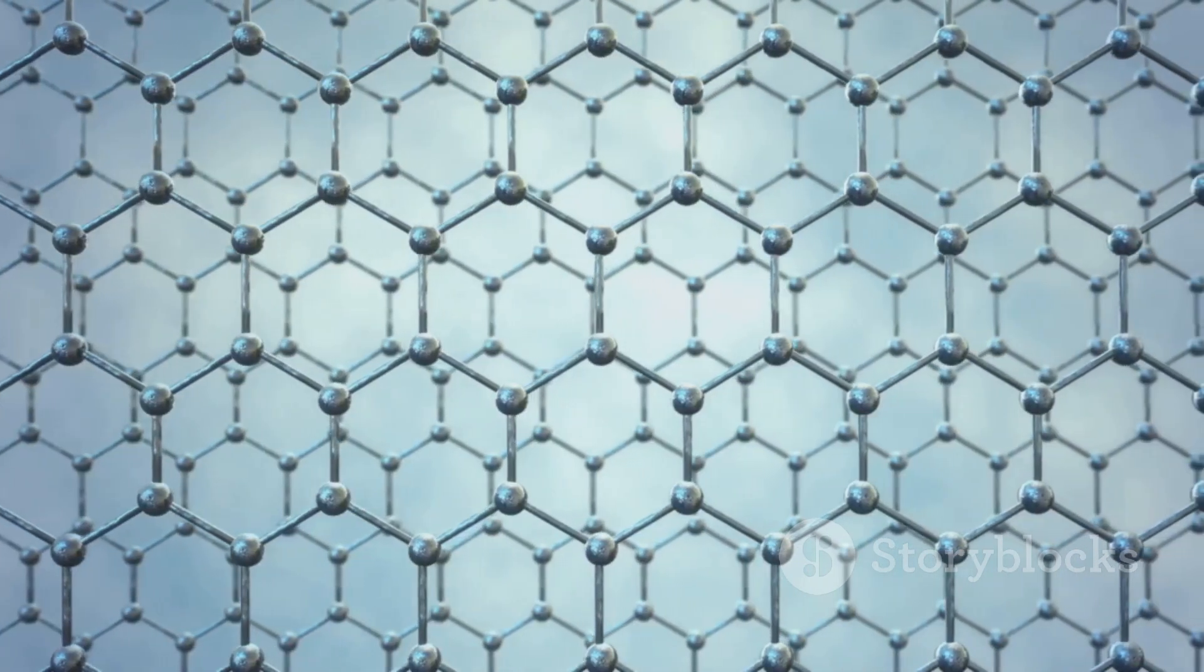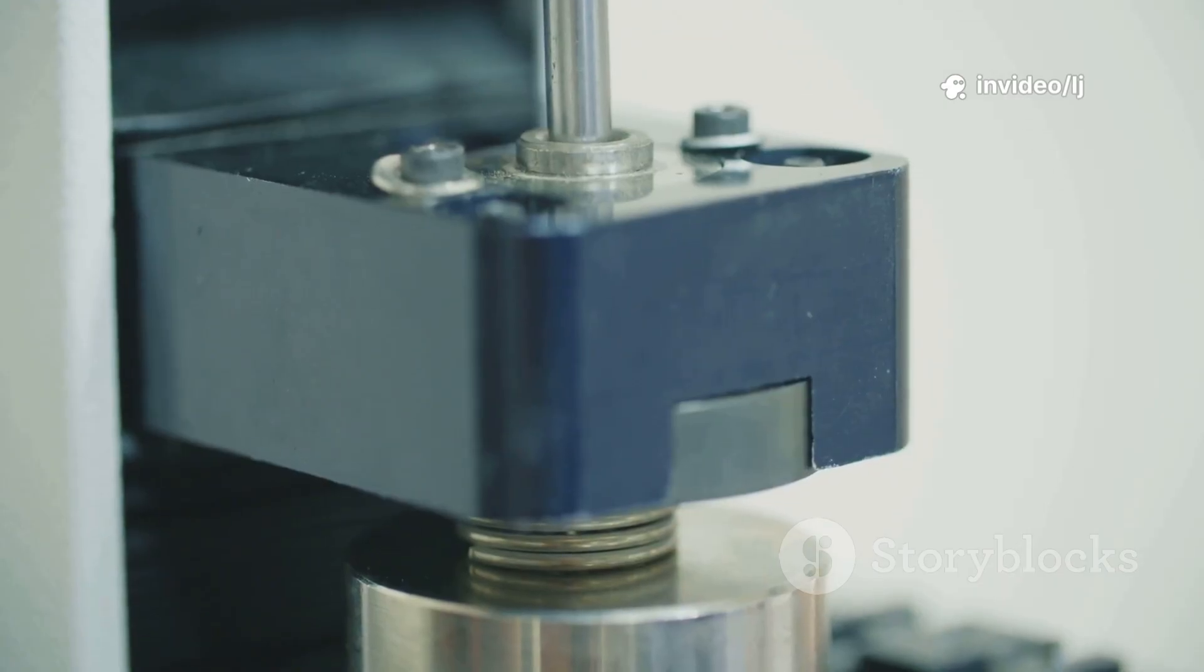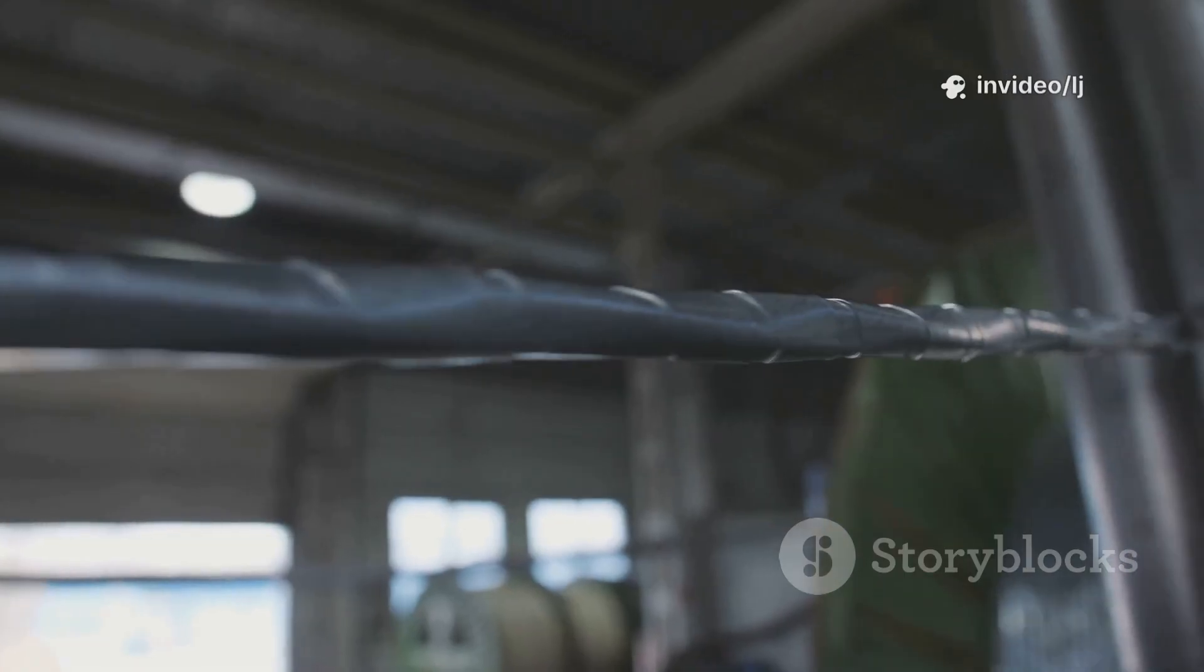So what is graphene? It's a single layer of carbon atoms arranged in a honeycomb shape. One atom thick, yet 200 times stronger than steel. It's light, flexible, and an amazing conductor.